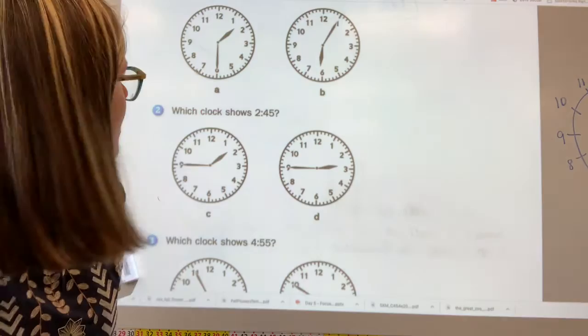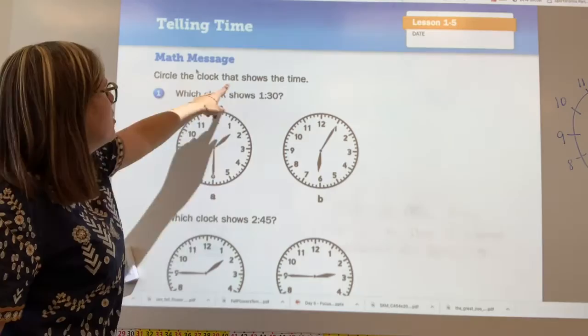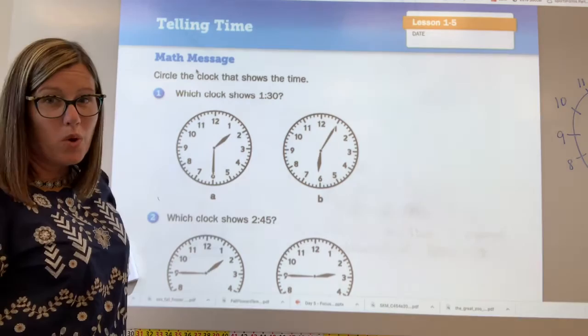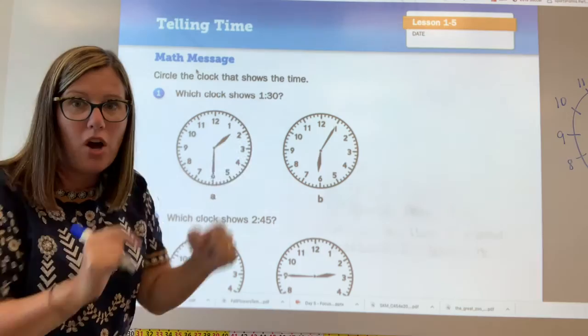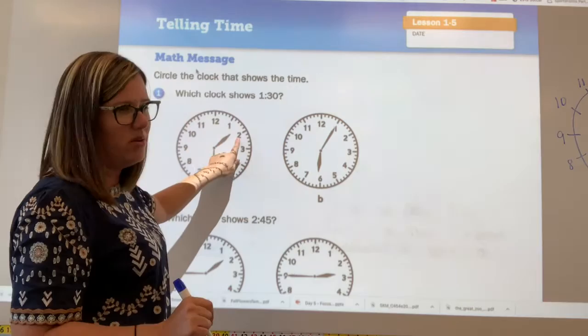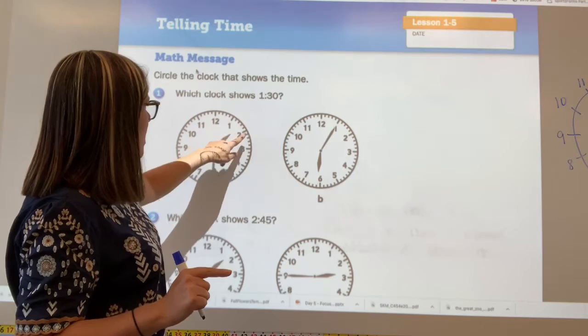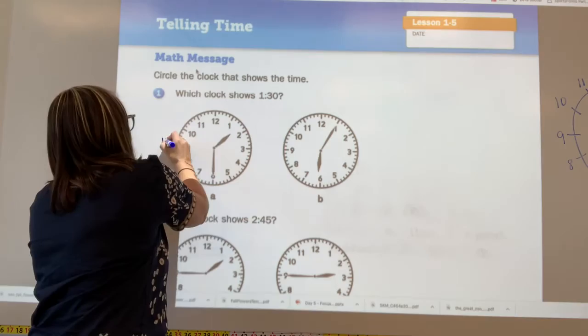So the first question says, the directions say, circle the clock that shows the time. And the first question says, which clock shows 130? So we're going to do this together. So have your pencil ready. So let's look at both clocks. We know that the hour hand is our smaller hand. The minute hand is a much longer hand. So when we look at this one, this is between the one and the two. So that means it's one o'clock. And then let's count our minutes. Five, 10, 15, 20, 25, 30. I think this clock shows 130. I'm going to write that down.